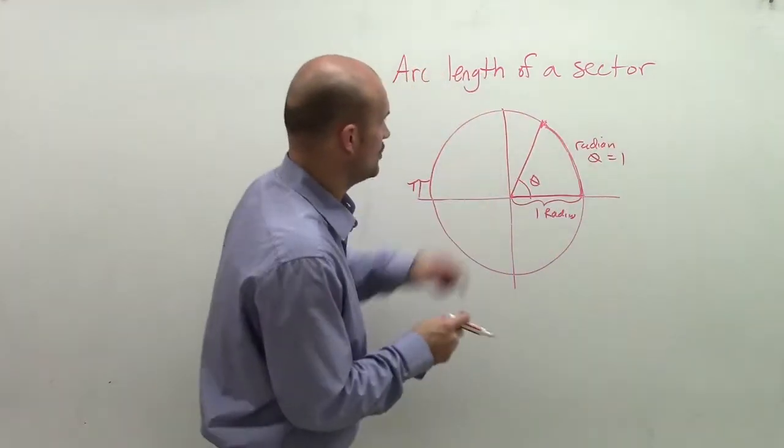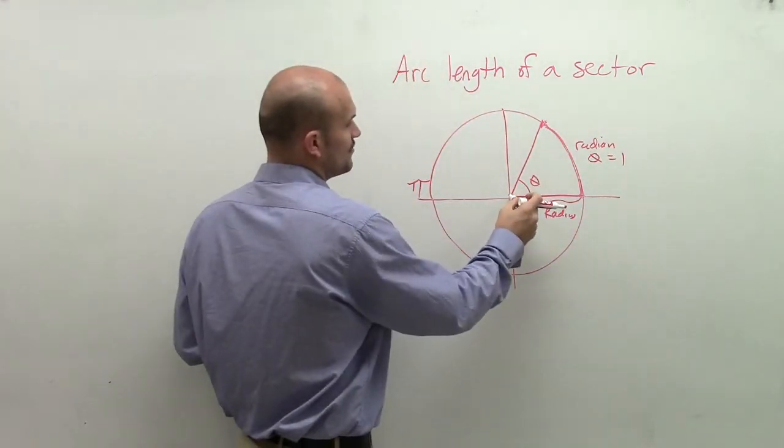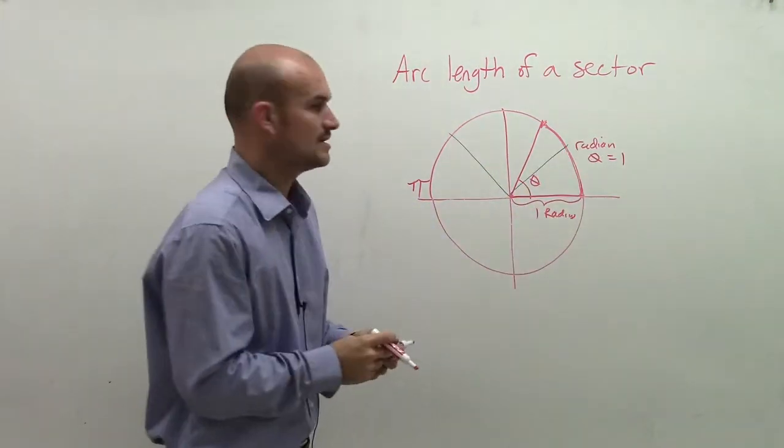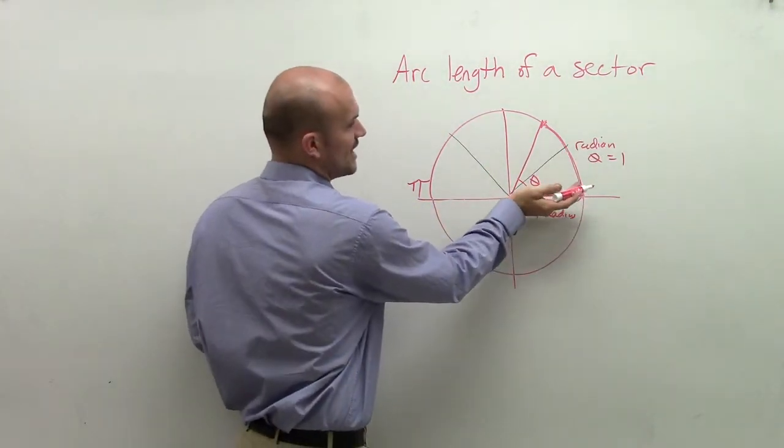So we look at this circle and say, you can break this up into fourths. And if you break it up into fourths, that means if I was going to rotate an angle, if I was going to rotate a ray, here would be 1 fourth.